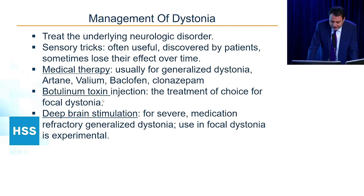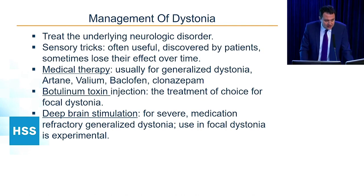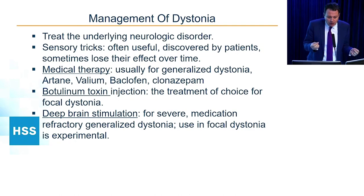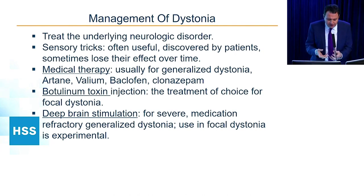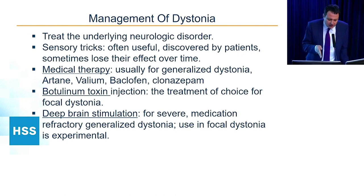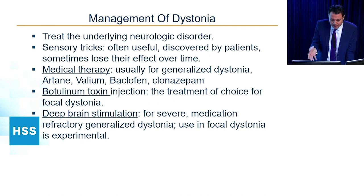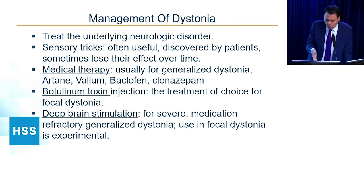Botulinum toxin was developed in the late 1980s and is approved for various indications. It is a toxin that prevents release of acetylcholine at the synaptic cleft, preventing muscle contraction — essentially weakening muscles. When injected into a hyperactive muscle, it provides relaxation without systemic side effects because it doesn't enter the bloodstream or the brain, so there are no side effects beyond the injection site.